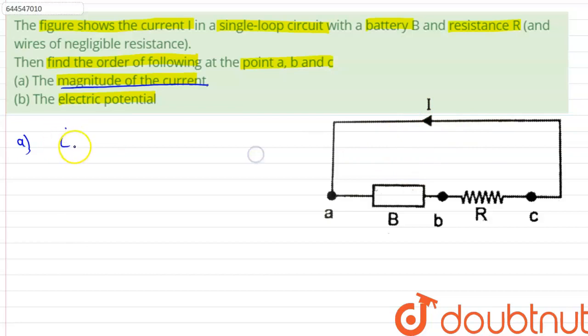Therefore we can simply write that the current at point A is equal to the current at point B which is equal to the current at point C.